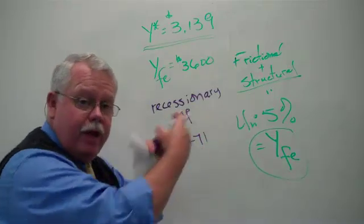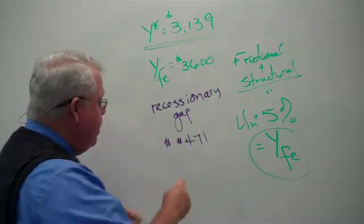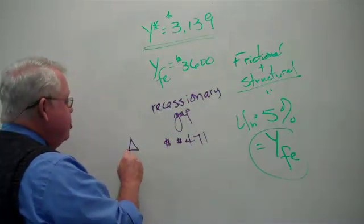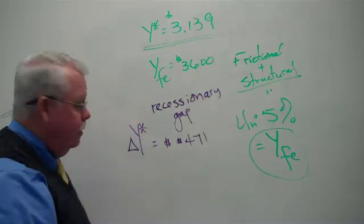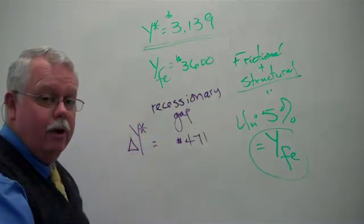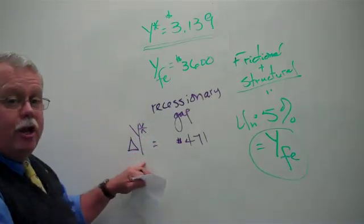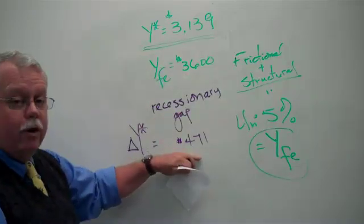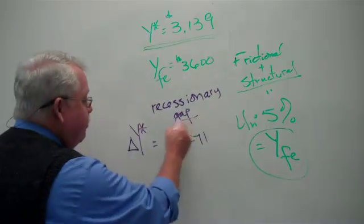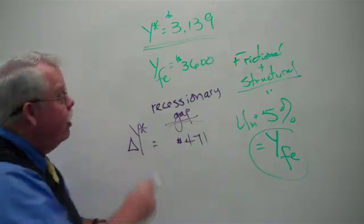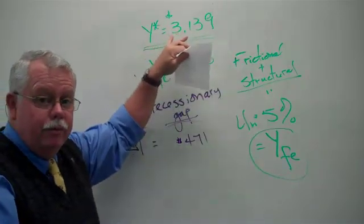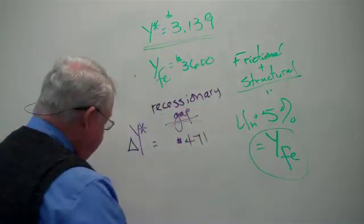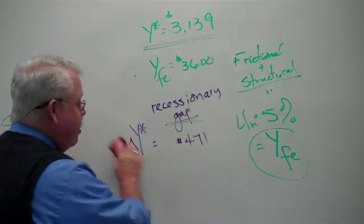That's the gap. And in the symbols that I'm going to use in a minute, that is the change in equilibrium that we need, delta Y star. The change in equilibrium we need to go to full employment is $471. That is the gap. In this case, it's a recessionary gap because spending is too low. Let's see how we would also show this on a graph.